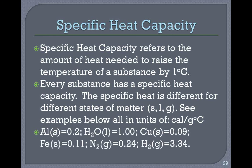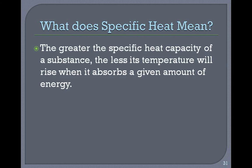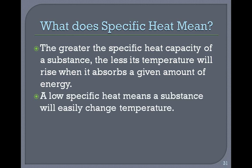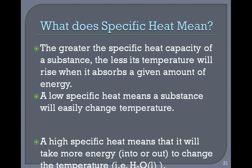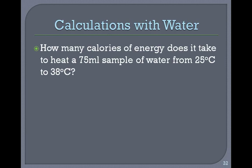Specific heat capacity refers to the amount of heat needed to raise the temperature of a substance by one degree Celsius. Every substance has a specific heat capacity, and it differs for different states of matter — solid, liquid, or gas. All units are in calories per gram degrees Celsius. Examples: aluminum is 0.2, liquid water is 1, copper is 0.09, solid iron is 0.11, nitrogen gas is 0.24, hydrogen gas is 3.34. The greater the specific heat capacity, the less a substance's temperature will rise when it absorbs a given amount of energy. A low specific heat means a substance will easily change temperature; a high specific heat means more energy is required to change temperature.